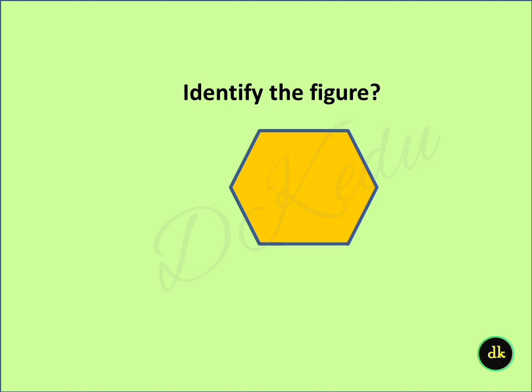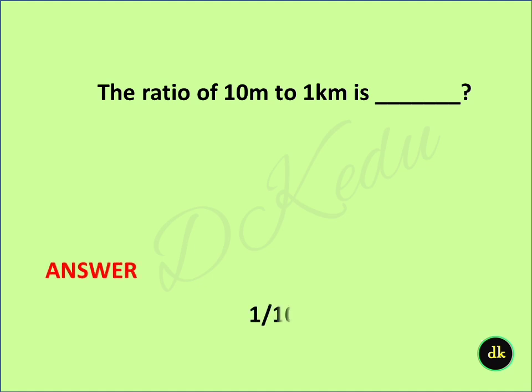Identify the figure. Answer: A hexagon. The ratio of 10 meter to 1 kilometer is? Answer: 1 by 100.